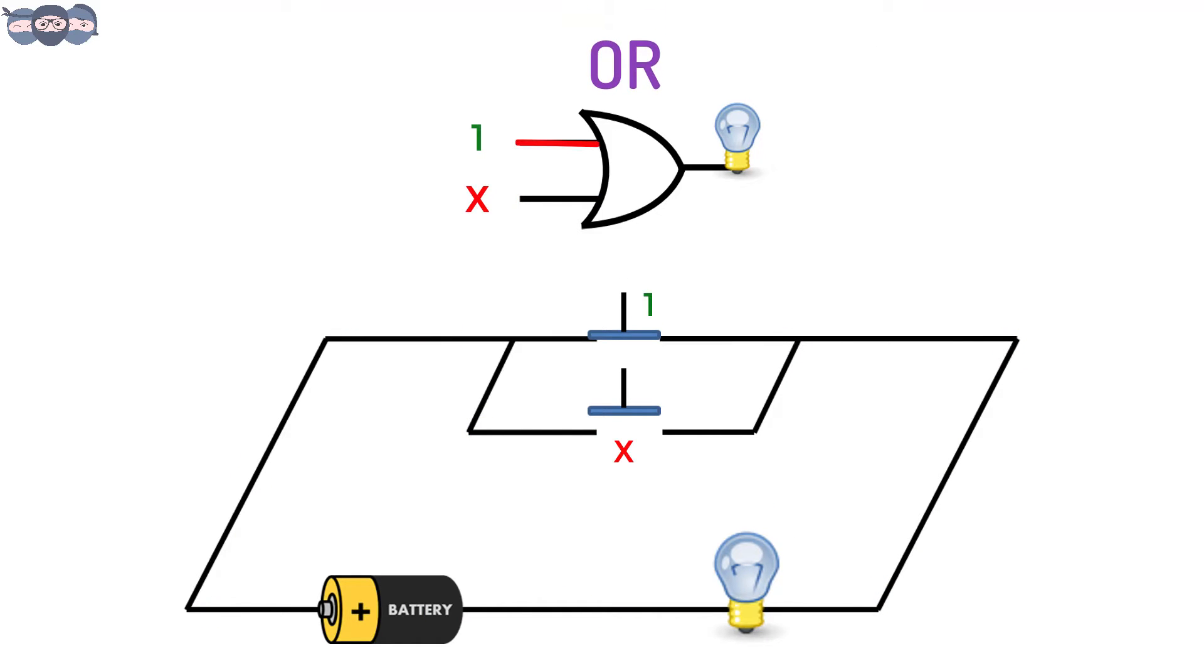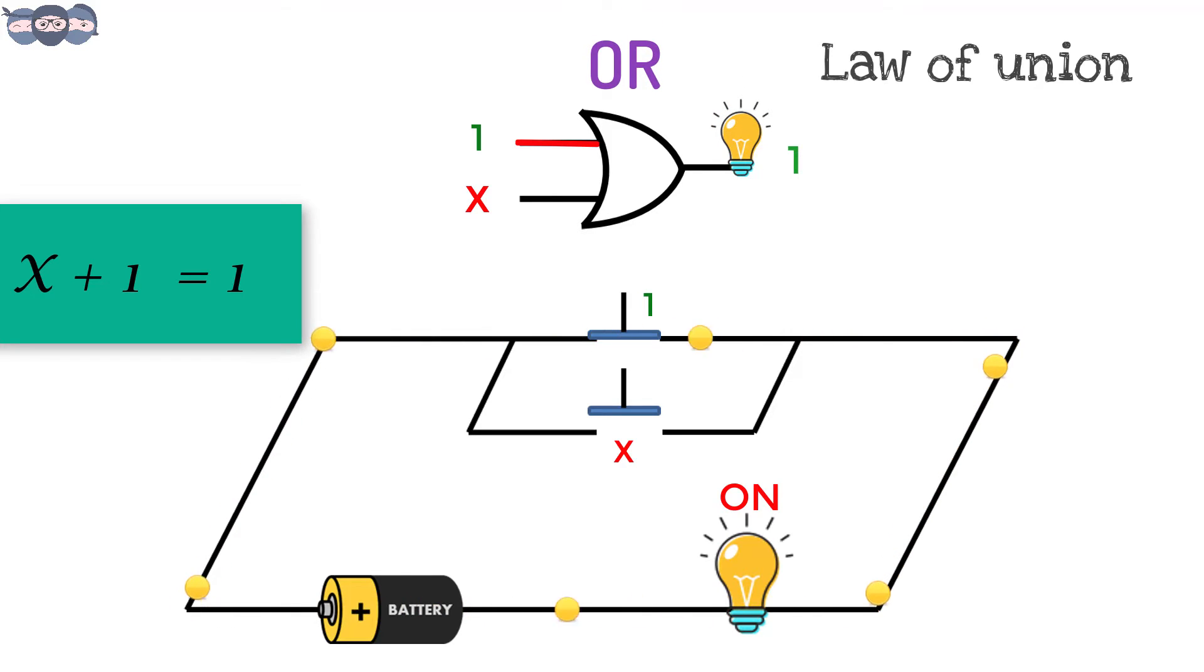Let the first input be 1. Here, the path is always connected, which makes the output high. In OR gate, as long as one input is at logic 1, the output is high. X or 1 is 1.